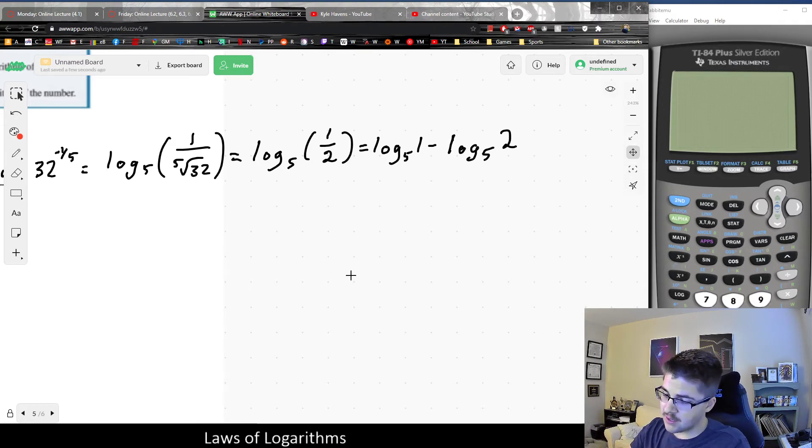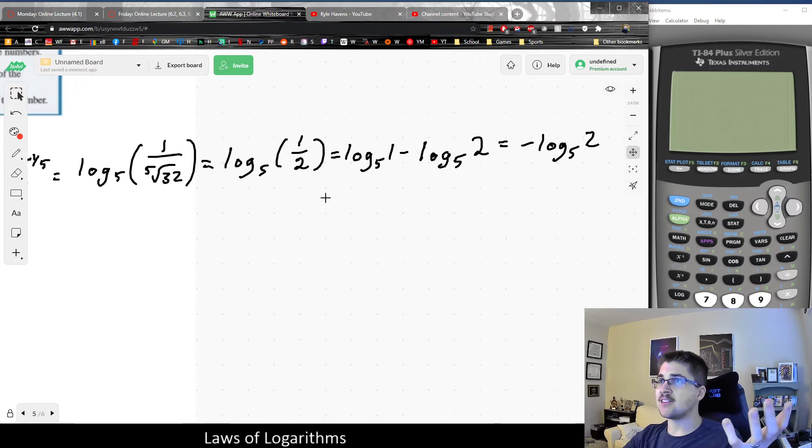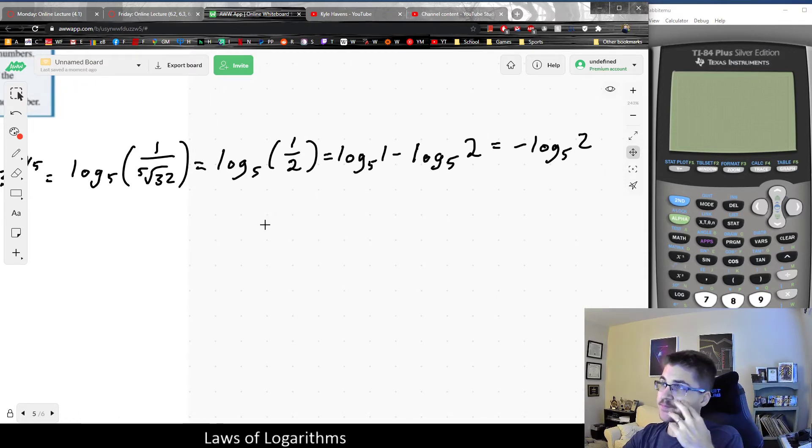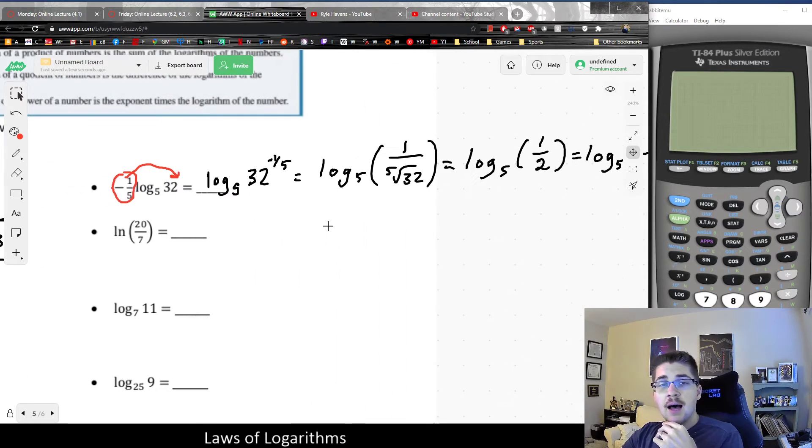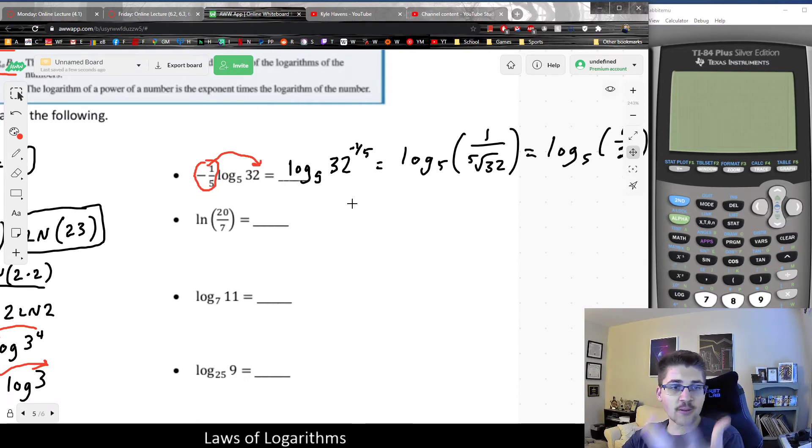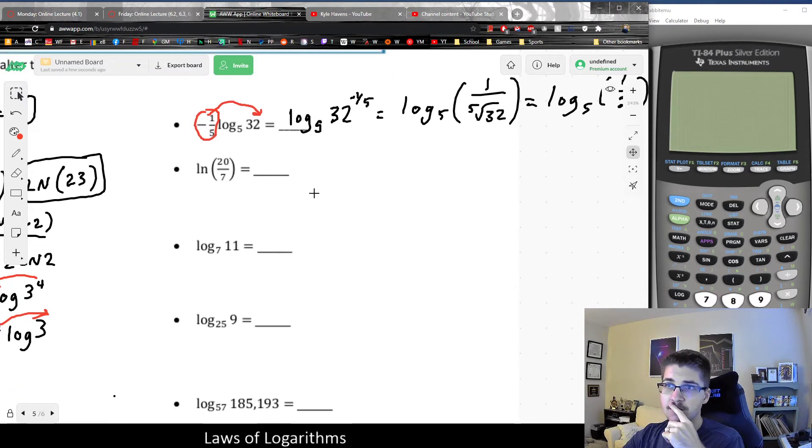And even here, the log of 1 is always 0, so this would leave me with negative log base 5 of 2. And again, lots and lots of different ways of writing it. There's no correct answer, but the goal is to use different rules and play around with them for the sake of fun.